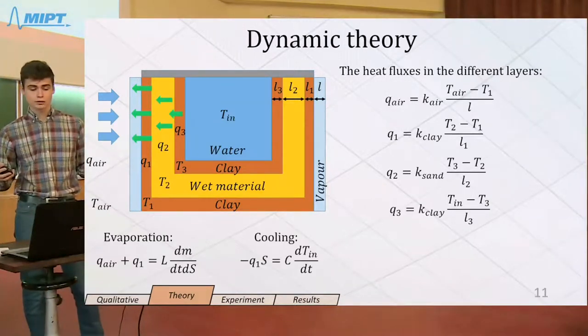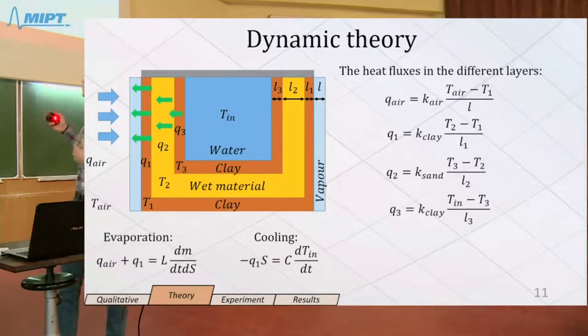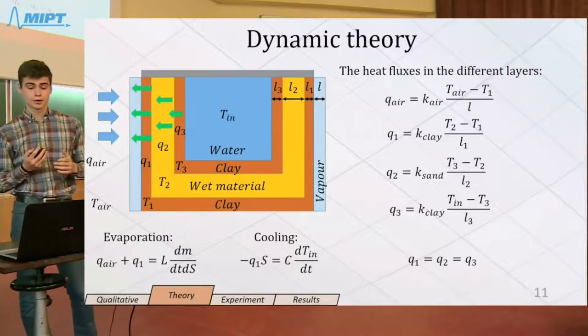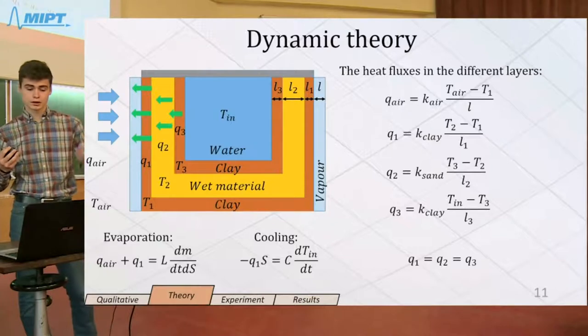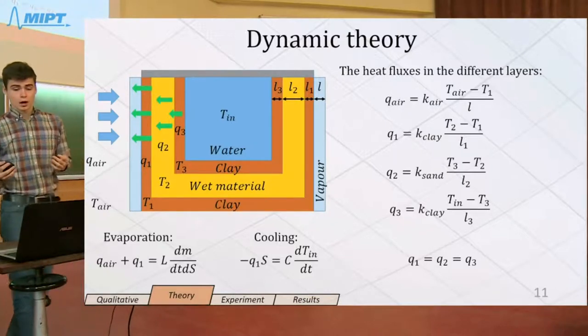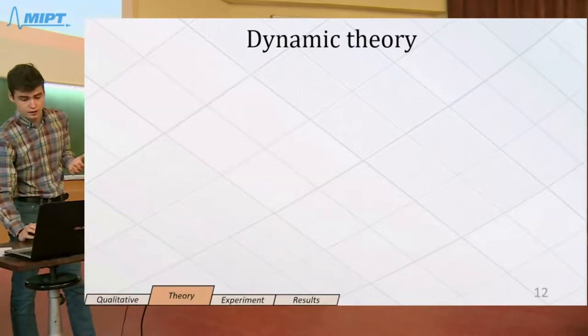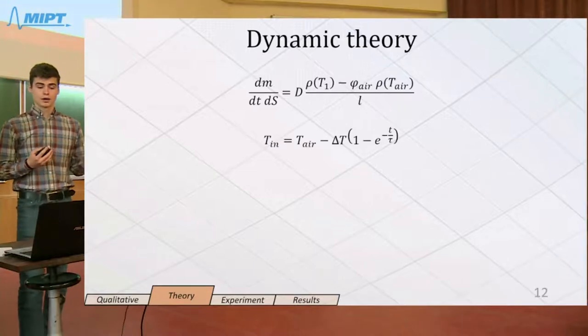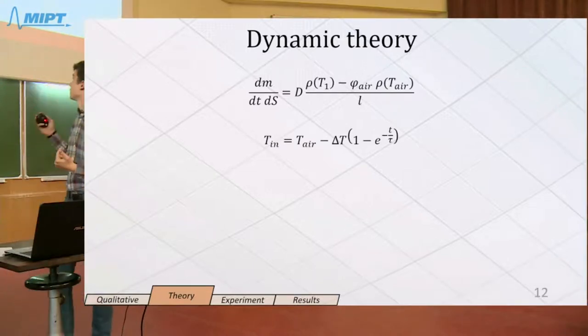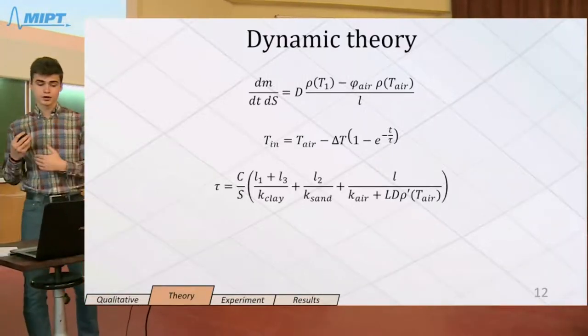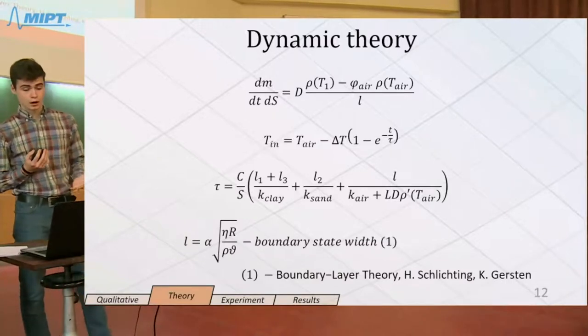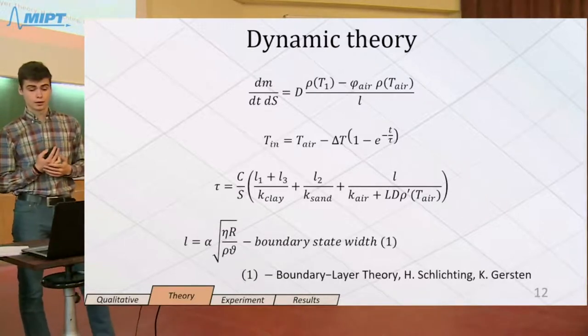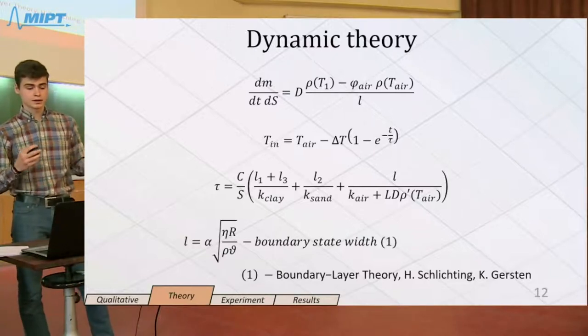The sum of the flux from air to pot and from pot to water is equal to the flux from water evaporation. This is the reason for cooling of our system. Under the assumption that thermal inertia of water is much bigger than thermal inertia of the pot itself, we can solve the equation and find the temperature time dependence, where tau is the expression. It's important to say that L is the boundary layer width which we took from theory. But this has a big error, like 20 percent.